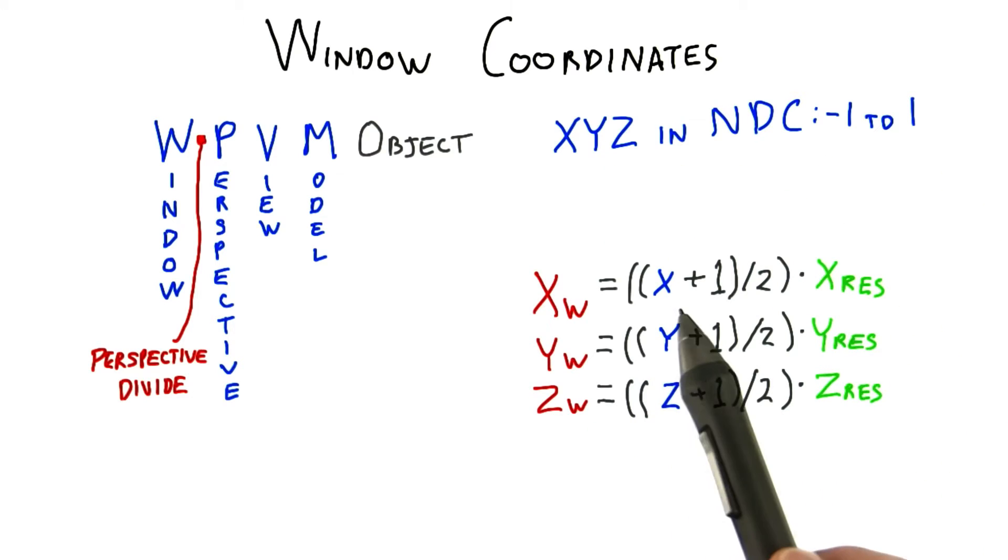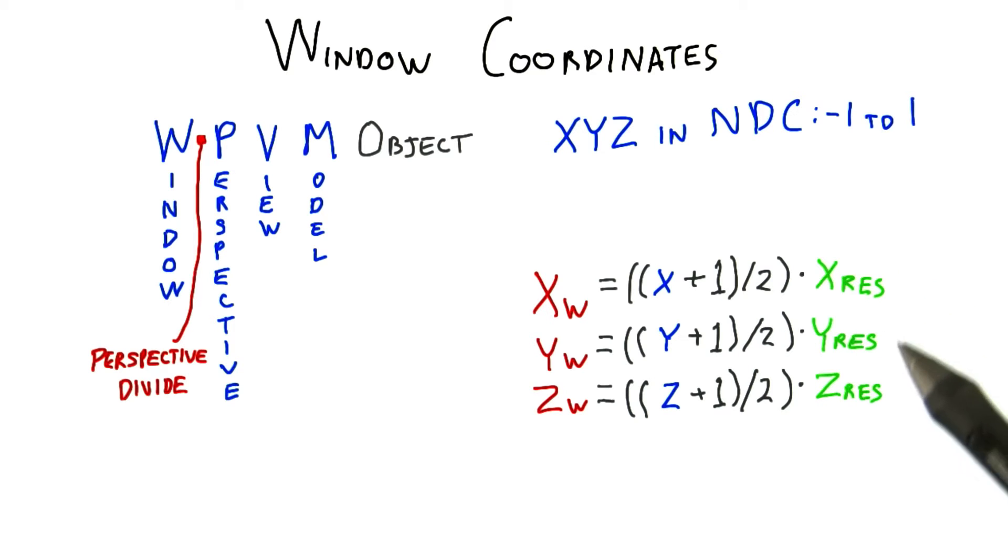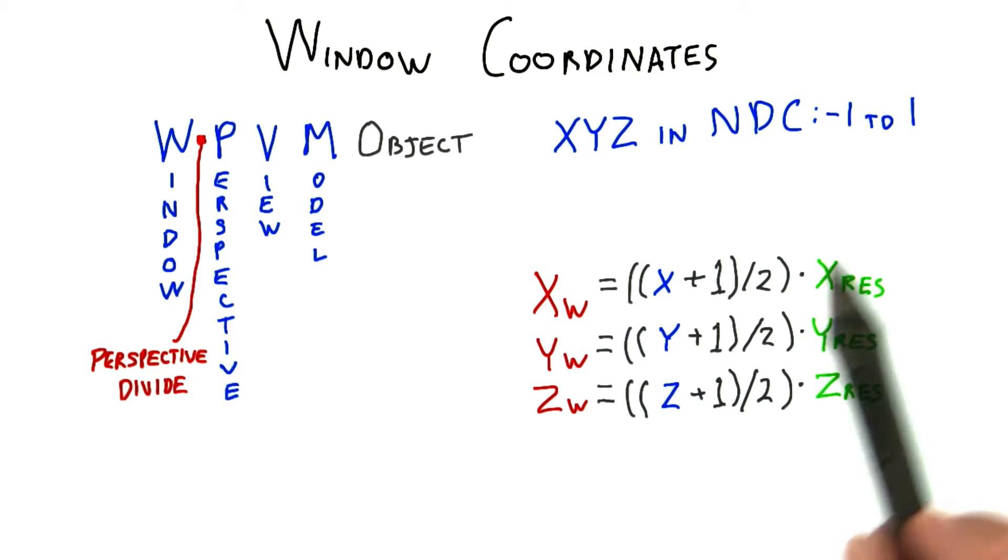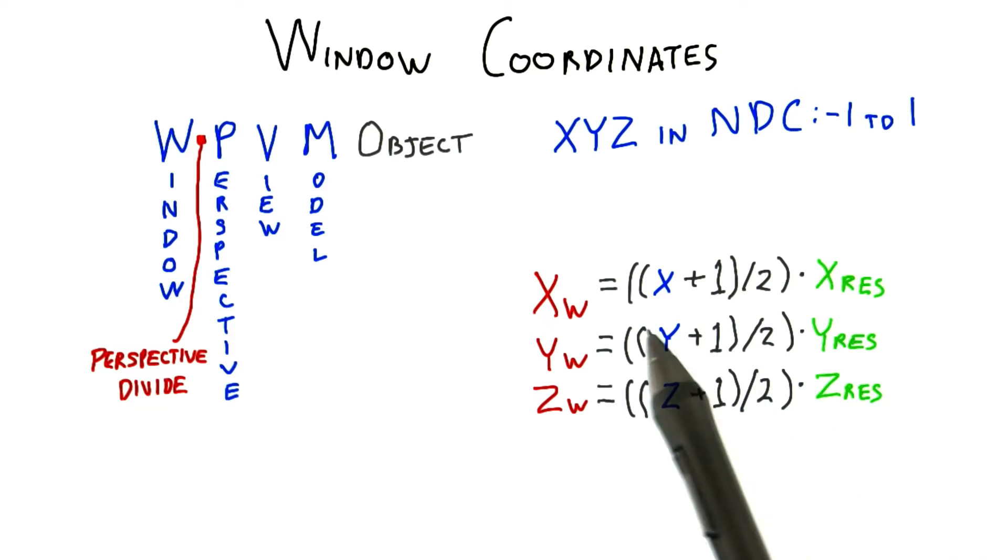The answer is simple enough. Add 1, divide by 2, then multiply by the windows resolution. Doing this operation changes from negative 1 to 1 to a range of 0 to 1.